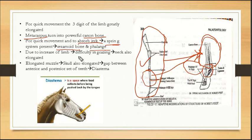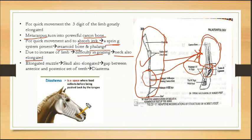Due to the increase of limb length, there is difficulty of grazing. So the neck is elongated, so it can easily eat grass. The mouth and nose portion elongated as well. The skull is elongated, and the gap — diastema — is developed.